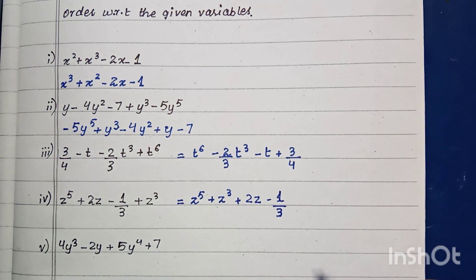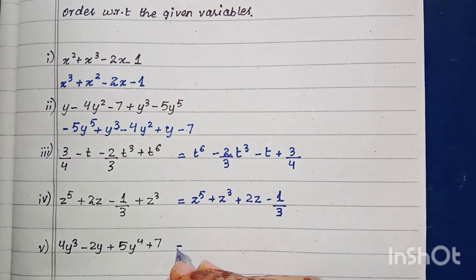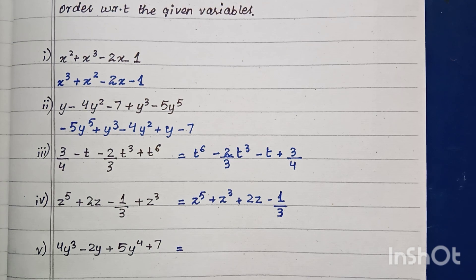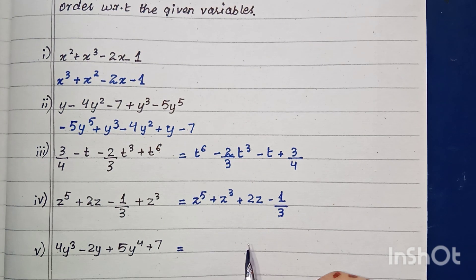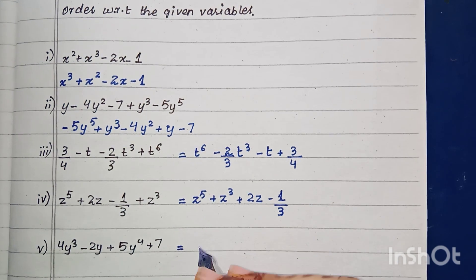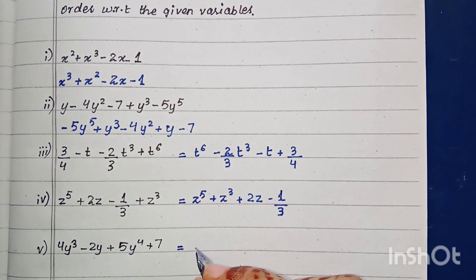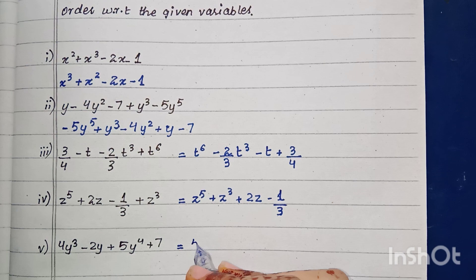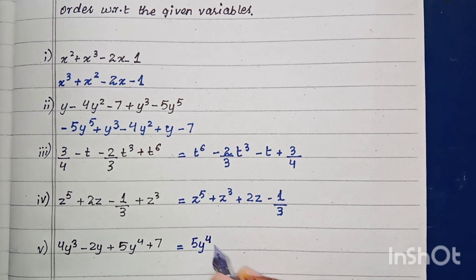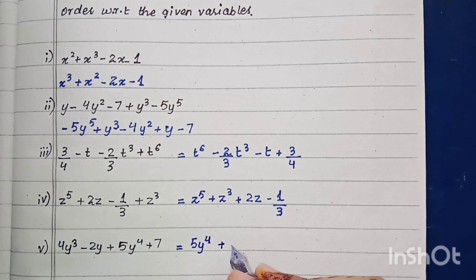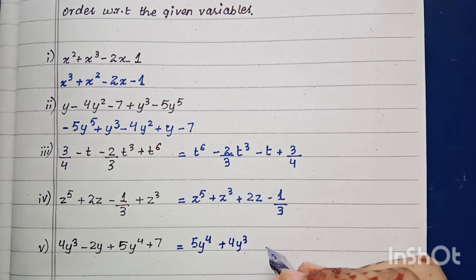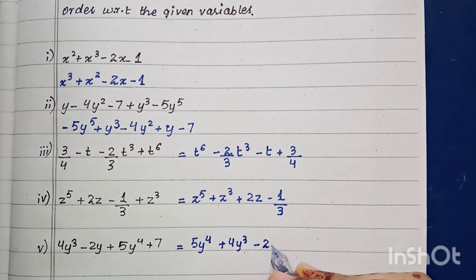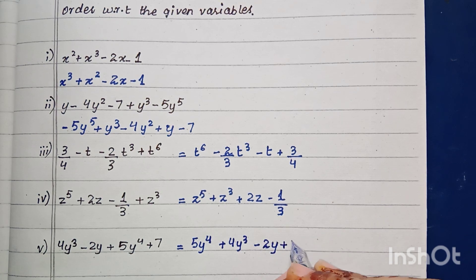In part five, the highest power is 5y⁴, so we write 5y⁴ first, then plus 4y⁴, then minus 2y, and then plus 7.